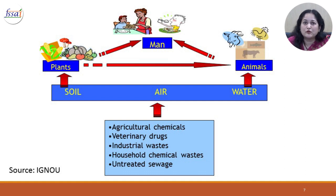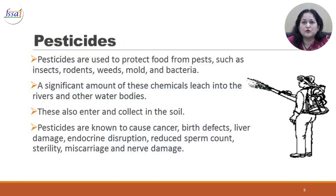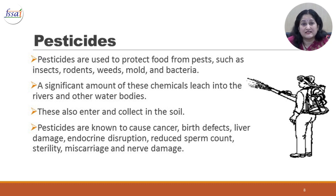Man is on top of the food chain and when he consumes these contaminated plants and animals, he too then receives all these toxins. Pesticides are used to protect food from pests such as insects, rodents, weeds, mold and bacteria. A significant amount of these chemicals leach into the rivers and other water bodies from farms. When pesticides are sprayed on standing crop, they may also enter and collect in the soil. Pesticides are known to cause cancer, birth defects, liver damage, endocrine disruption resulting in reduced sperm count, sterility, miscarriage and even nerve damage.